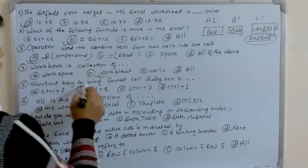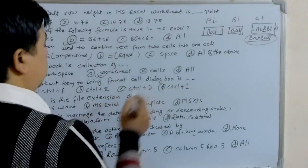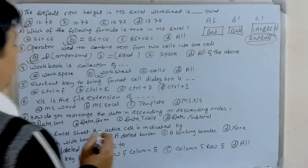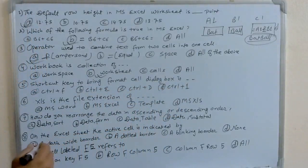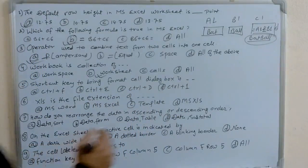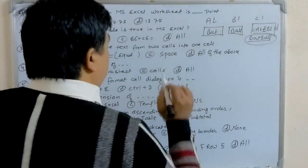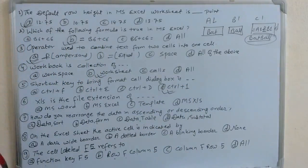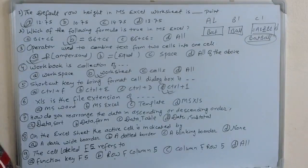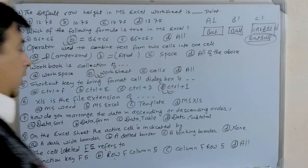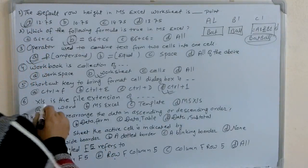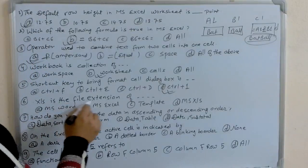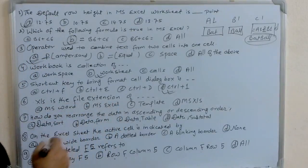Shortcut key to bring up the Format Cells dialog box: you have to use Ctrl+1. Ctrl+1 is used to bring up the Format Cells dialog box.